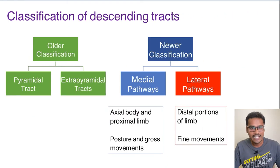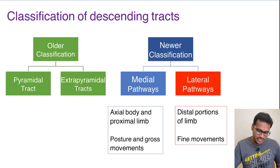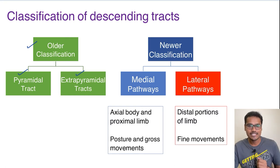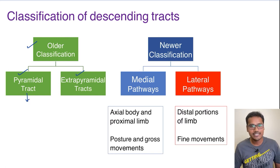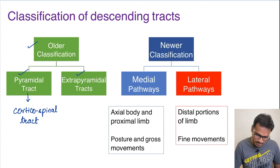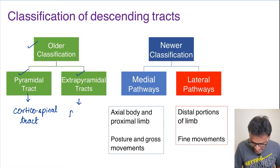What is the classification of descending tracts? Most of you would have heard the terms pyramidal tract and extrapyramidal tract, but that is the older classification. Still some examiners specifically ask about pyramidal and extrapyramidal tracts. The older classification: pyramidal tract is the corticospinal tract — the most important tract. All descending tracts have 'spinal' as a suffix because they reach the spinal cord. The corticospinal tract is the only pyramidal tract; all the rest are called extrapyramidal tracts.